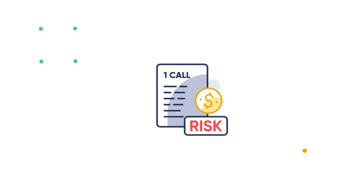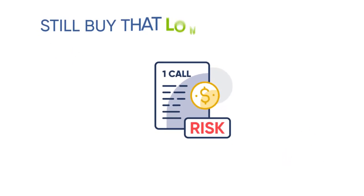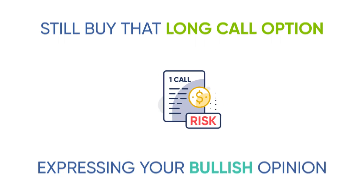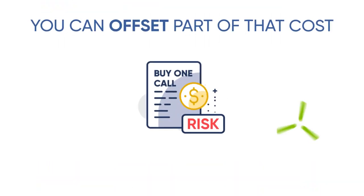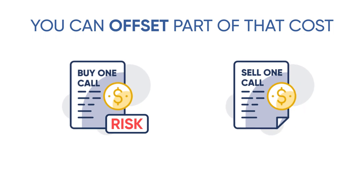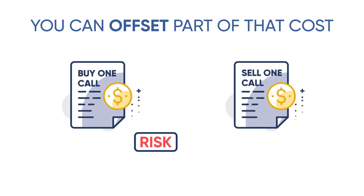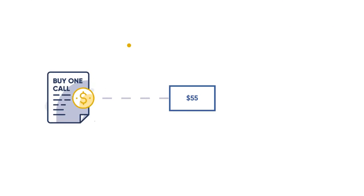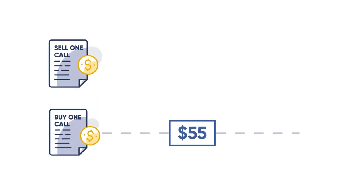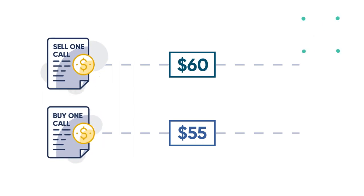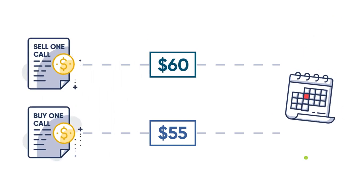Essentially, in a bull call spread, you still buy that long call option expressing your bullish opinion, but at the same time, you can offset part of that cost by selling another call option against it, reducing your risk to create a bull call spread. You buy a call option and simultaneously sell another less expensive call option with a higher strike price, with each sharing the same expiration date.